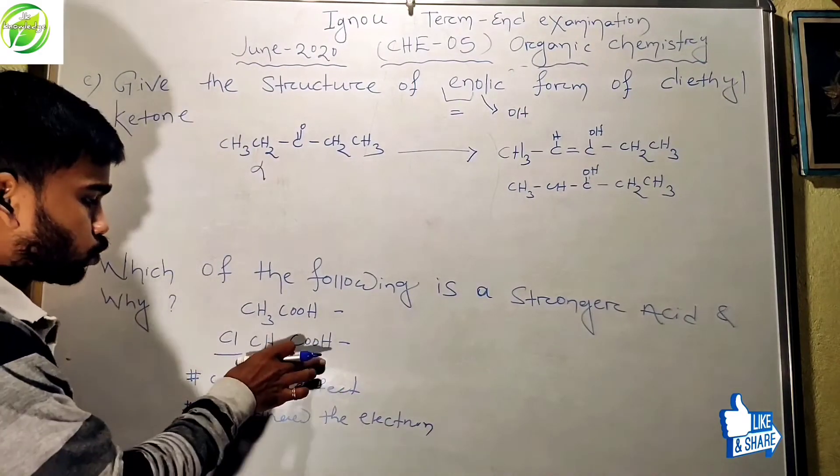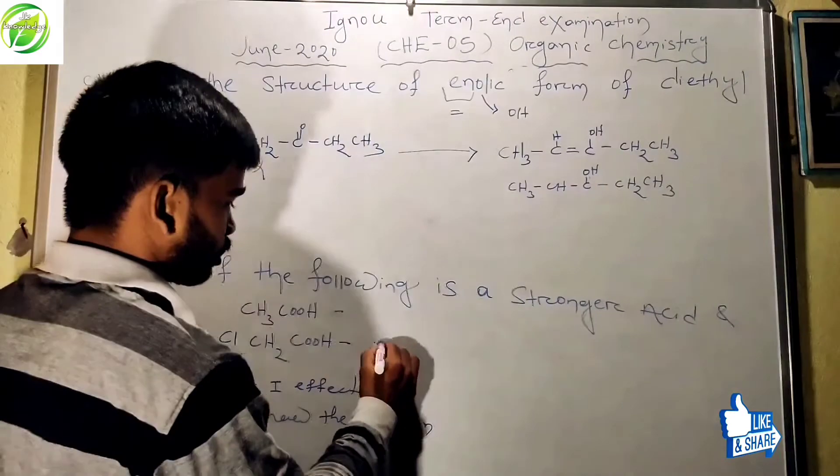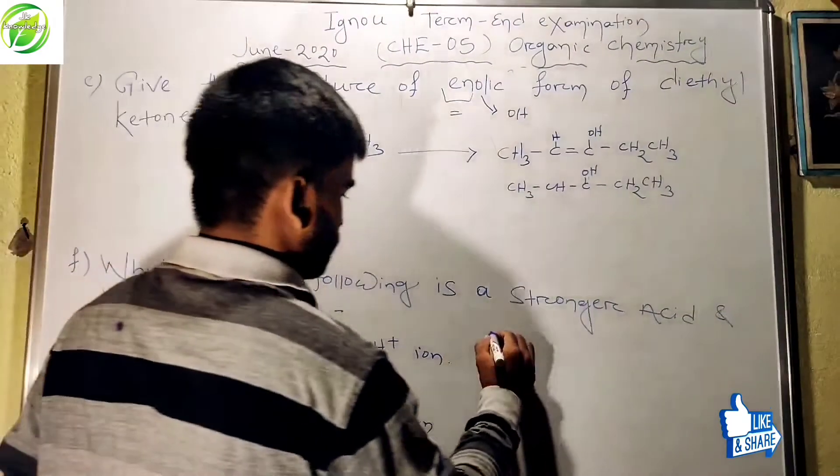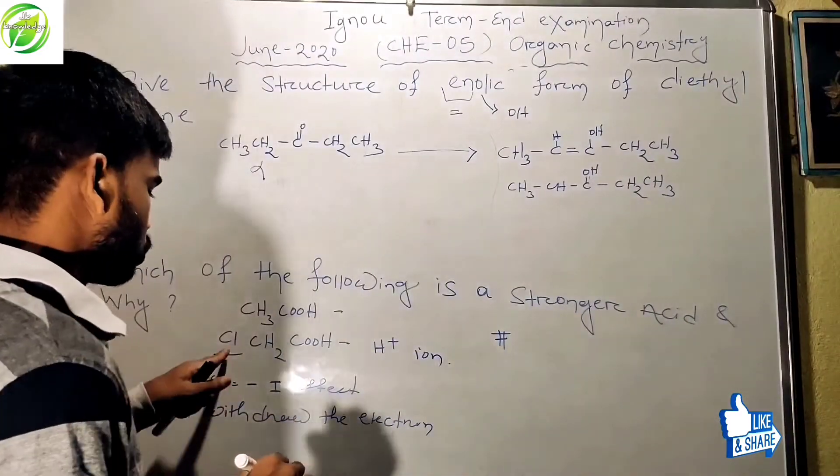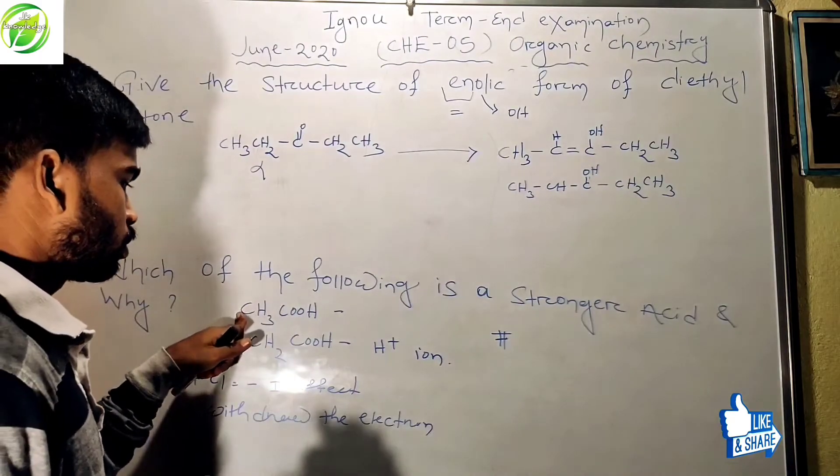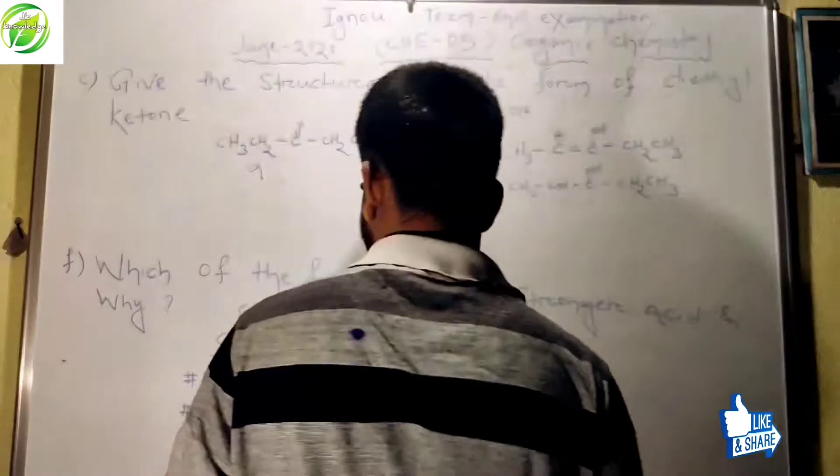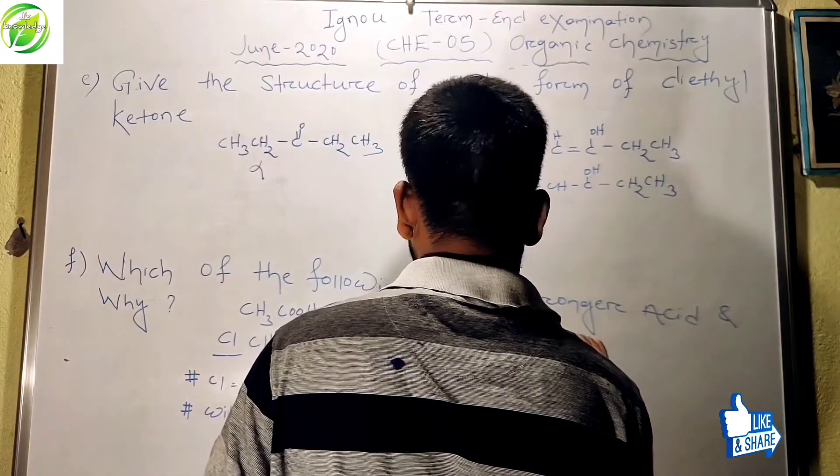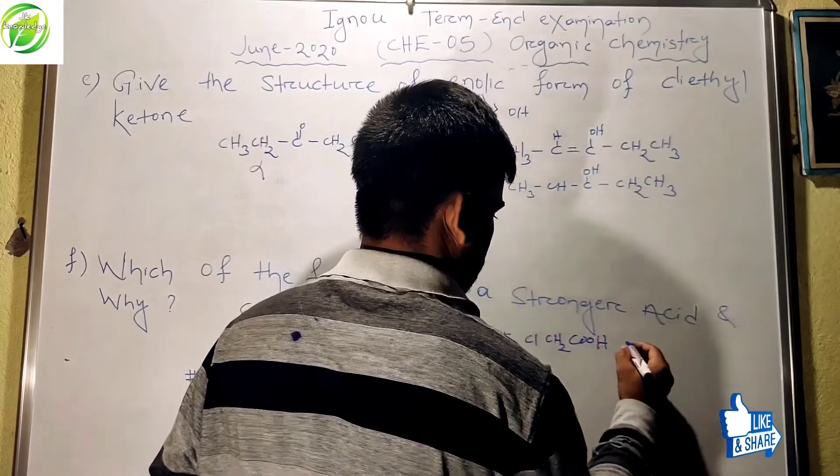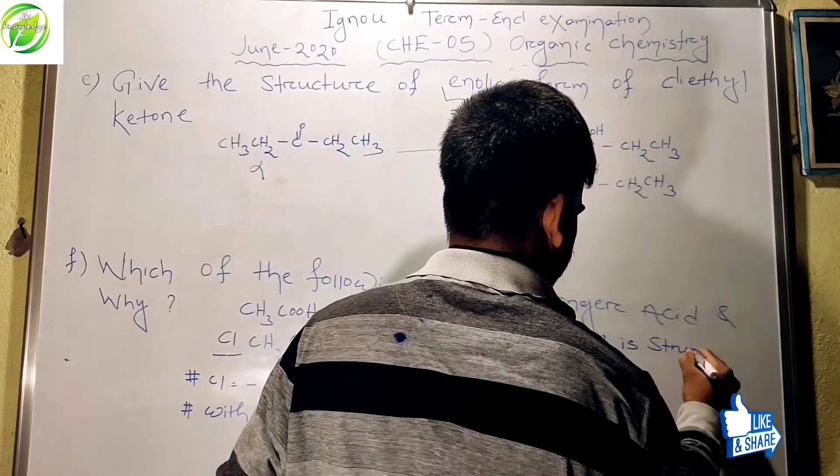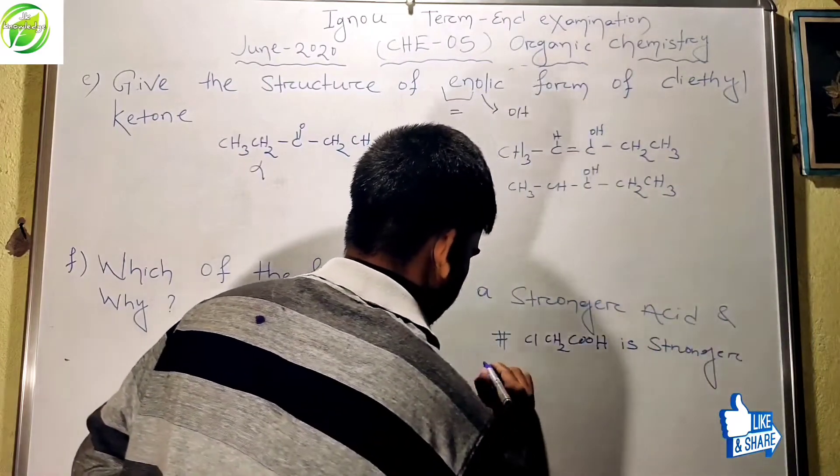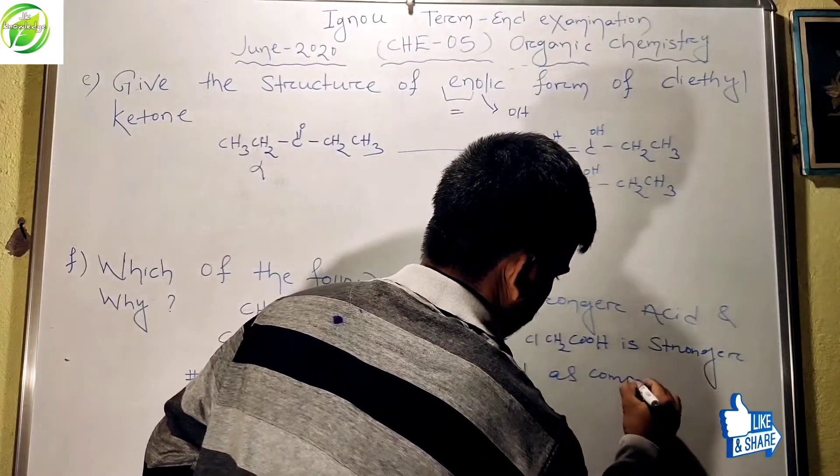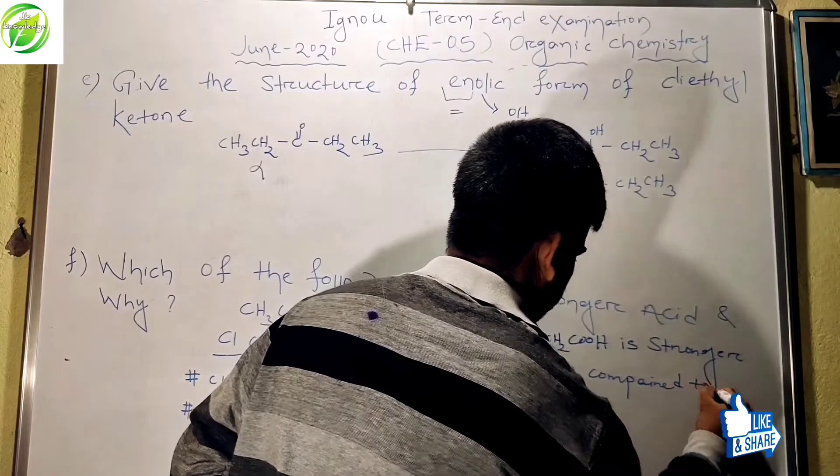So the answer is, the resultant answer is: 2-chloroethanoic acid is more acidic as compared to this. So 2-chloroethanoic acid is a stronger acid as compared with ethanoic acid.